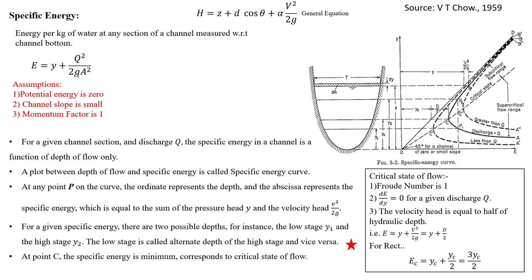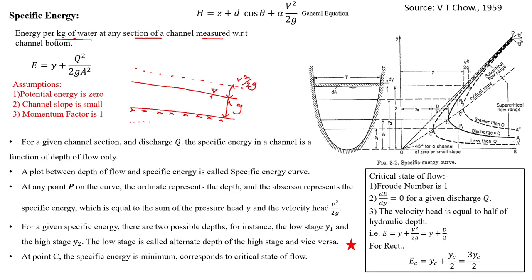What is specific energy? It is energy per kg of water — remember, energy per kg of water at any section of a channel, measured with respect to the channel bottom. If you take any channel, it will have a water level with a depth of y and some velocity head. Let's say this is the datum we consider. With respect to the datum there will be z also. Now for specific energy, we neglect z and consider the bed as datum. We calculate the energy with respect to the bed.